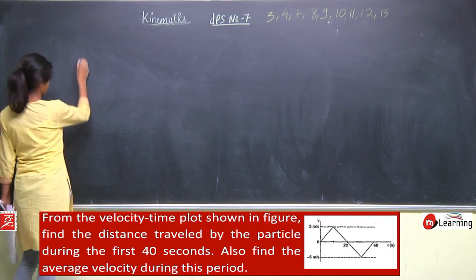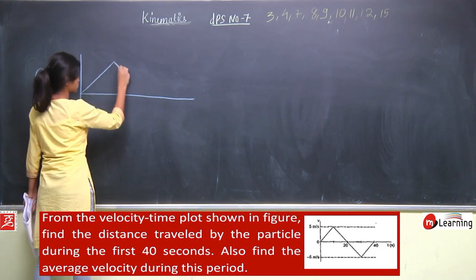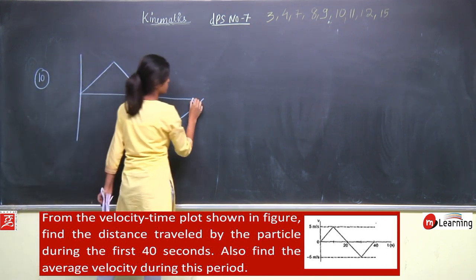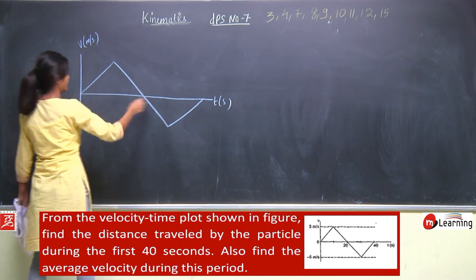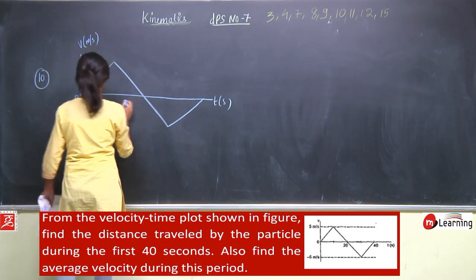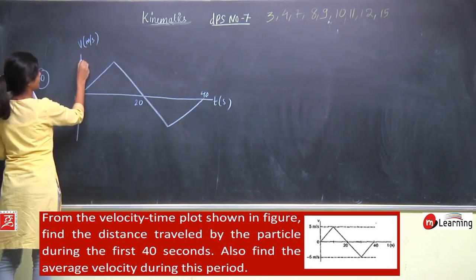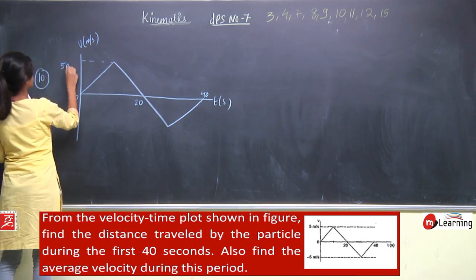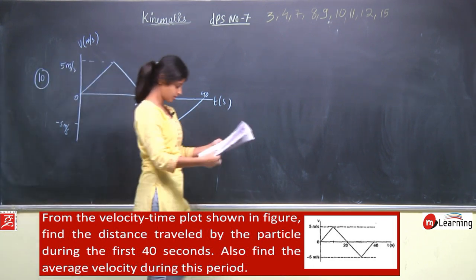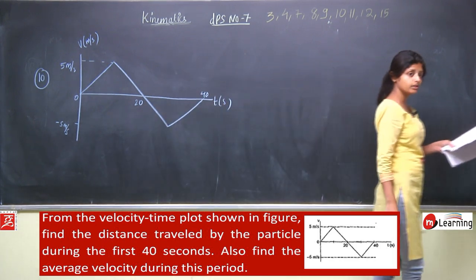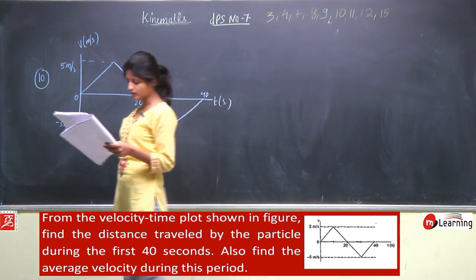Next is question number 10. This is a velocity versus time graph. Velocity is in meter per second, time is in seconds. The values shown are 0, 20, 40 seconds on the time axis and 5 meter per second and minus 5 meter per second on the velocity axis. From the velocity-time plot shown in the figure, find the distance travelled by the particle during the first 40 seconds, and also find the average velocity during this period.